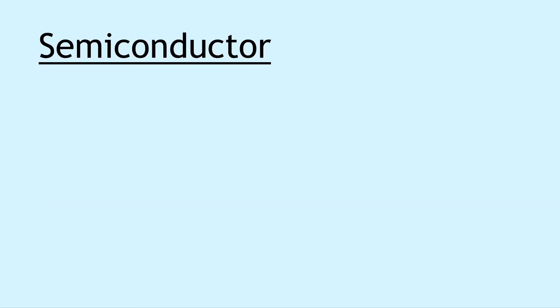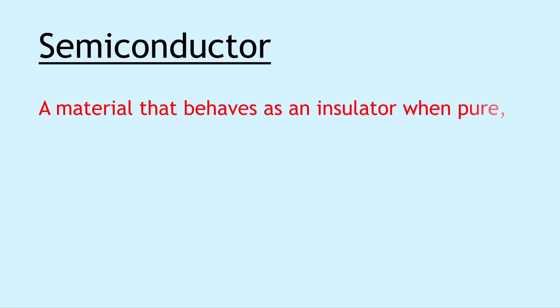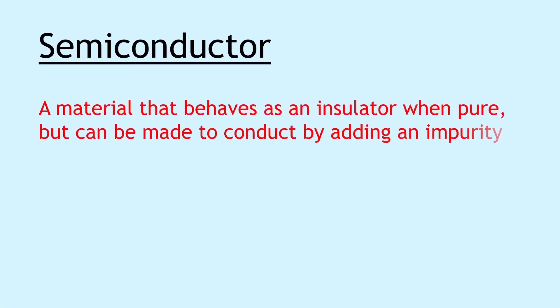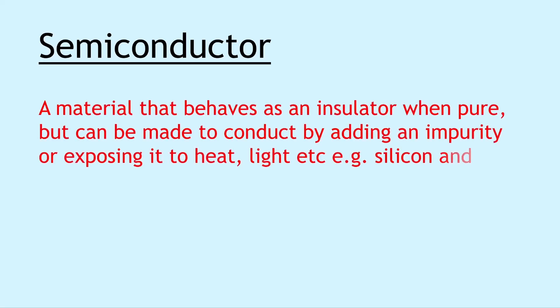Moving on we have a semiconductor, and this is a material that behaves as an insulator when pure, but can be made to conduct by adding an impurity or exposing it to heat and light etc. For example, silicon and germanium are common semiconductors.